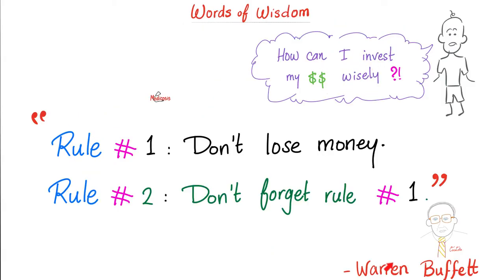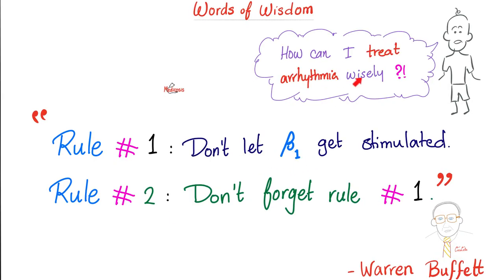How can I invest my money wisely? Warren Buffett answered, rule number one, don't lose money. Rule number two, don't forget rule number one. A medical student asked, how can I treat arrhythmia wisely? Rule number one, don't let the beta one get stimulated, i.e. give a beta blocker. Rule number two, don't forget rule number one.